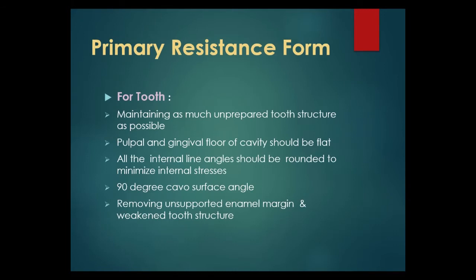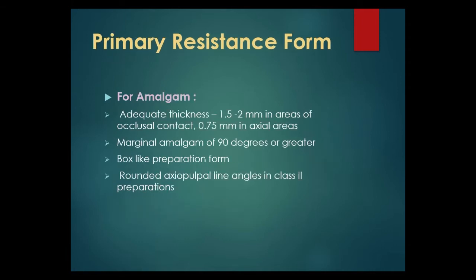Primary resistance form for the tooth involves maintaining as much unprepared tooth structure as possible. The pulpal and gingival floor of the cavity should be flat. All internal line angles should be rounded to minimize internal stresses at 90 degrees. Cavity surface angles should be 90 degrees, removing unsupported enamel margin and weakened tooth structure. For amalgam, primary resistance form is obtained by adequate thickness of cavity preparation: 1.5–2 mm in areas of occlusal contact and 0.75 mm in axial areas.